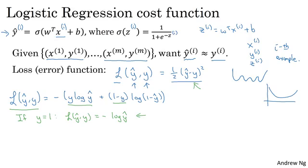This says, if y equals 1, you want negative log y hat to be as small as possible. So that means you want log y hat to be large, to be as big as possible, and that means you want y hat to be large. But because y hat is the sigmoid function, it can never be bigger than 1. So this is saying that if y is equal to 1, you want y hat to be as big as possible, but it can't ever be bigger than 1. So it's saying you want y hat to be close to 1 as well.